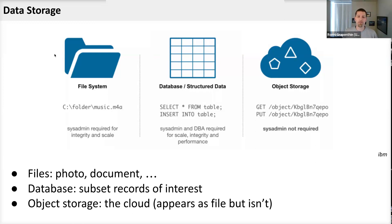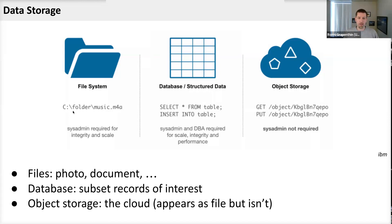You can have a file system — something we explored in previous videos. If you're on a Windows machine, you might be familiar with a path like C:\folder\folder\folder and then eventually you end up in a file. In Unix, you start with a forward slash, then your folder structure and subfolders, with the last forward slash taking you to a file. The files can be photos, documents, or videos.